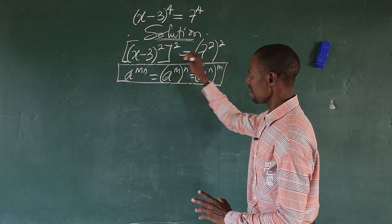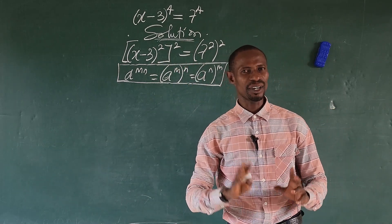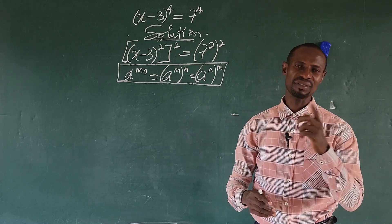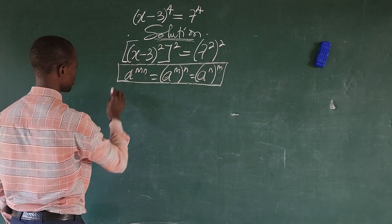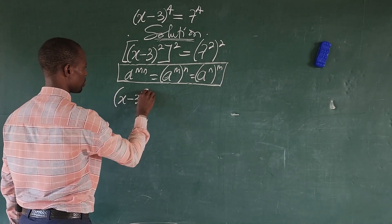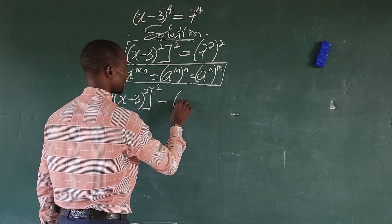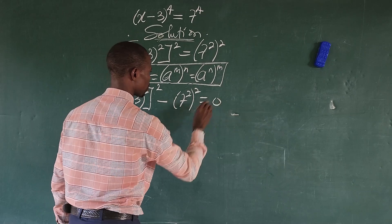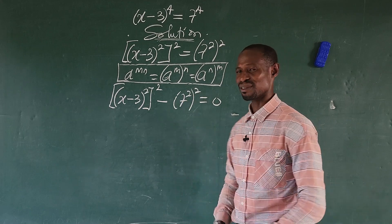So after rewriting everything, let's move this to the side of this equation — because since we're having the power of 2, what comes to mind is either sum of two squared or difference of two squared. So let's move this to this side and see what this gives us. We're going to have bracket x minus 3, all to the power of 2, in a square bracket, to the power 2, then minus bracket 7 to the power of 2, close bracket, all to the power of 2, equal to 0. Which of the laws are we looking at here? This is difference of two squared.